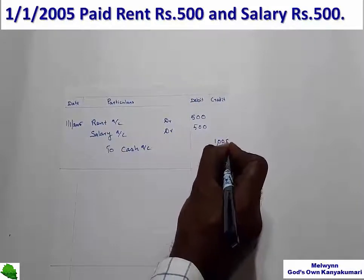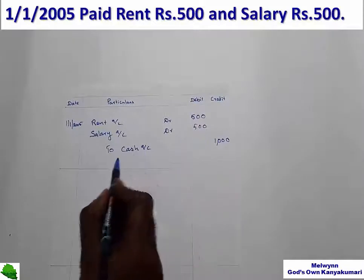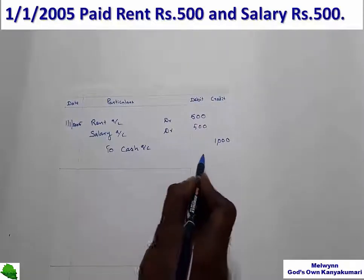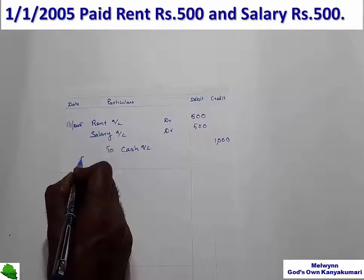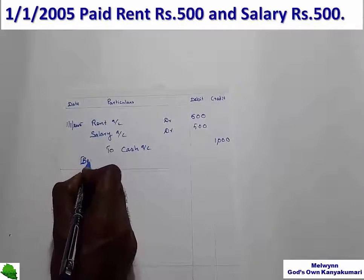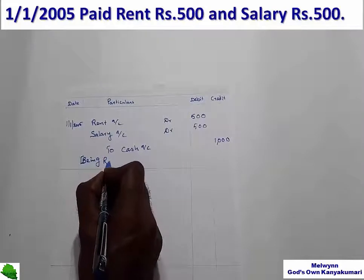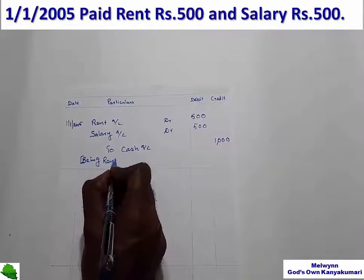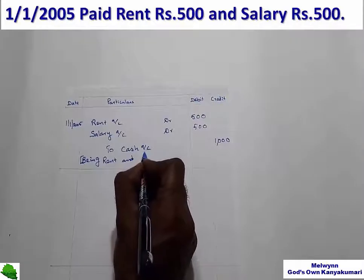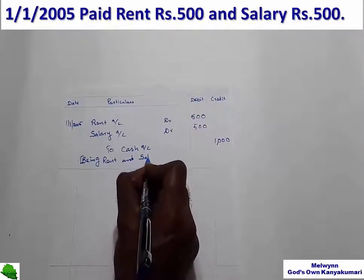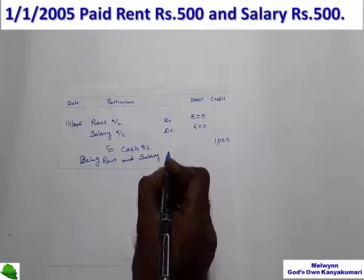Cash goes out — rent account debit, salary account debit, to cash account 1000. Narration: being rent and salary paid.